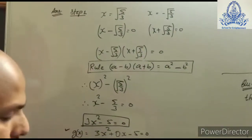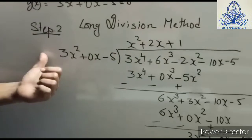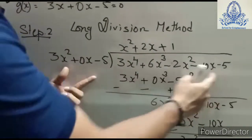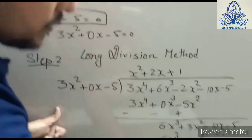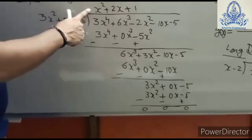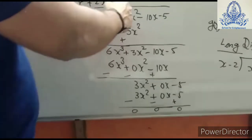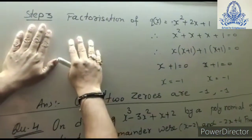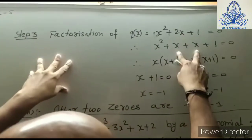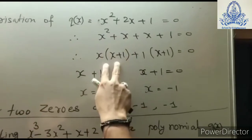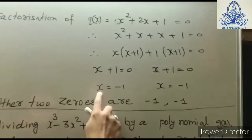In step 2, we divide the given polynomial by this g(x) using the long division method. The quotient obtained is our next polynomial to factorize. In step 3, we factorize this quotient by the splitting middle term method, giving (x + 1)(x + 1) = 0, so x = −1 and x = −1.